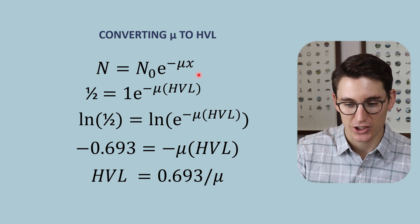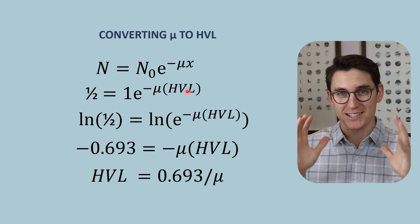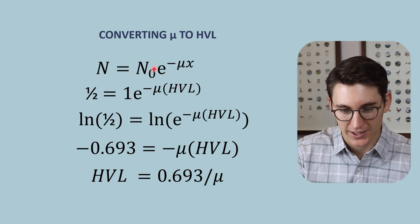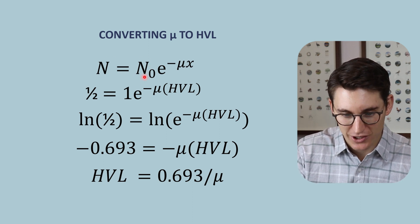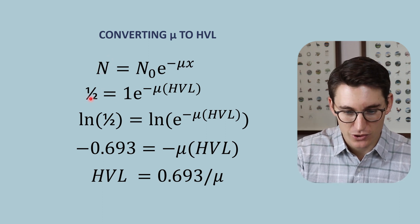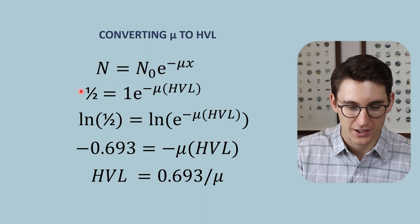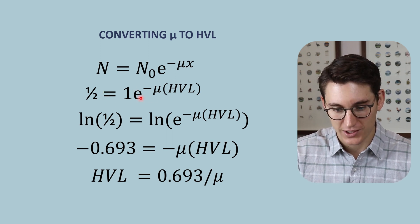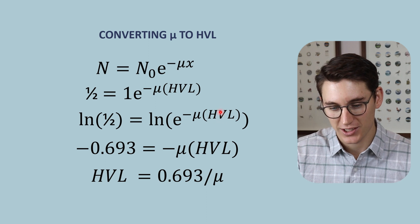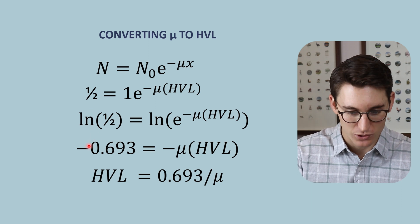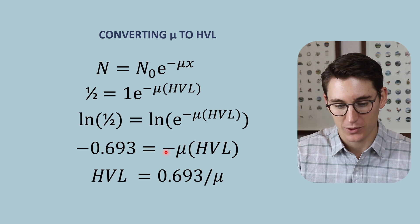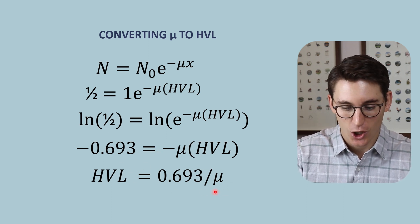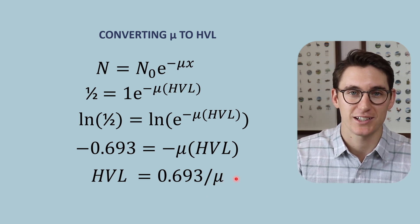The distance x in our equation can be substituted for the half value layer, which is an actual distance in millimeters or centimeters. Traveling one half value layer reduces one incident photon to half — so 100 incident photons become 50 transmitted photons. We substitute n-naught and n with 1 and 0.5. Taking the natural log of both sides: the natural log of one half equals minus 0.693, and the natural log of the right-hand side equals minus the linear attenuation coefficient times the half value layer. Isolating the half value layer gives us HVL = 0.693 divided by the linear attenuation coefficient.